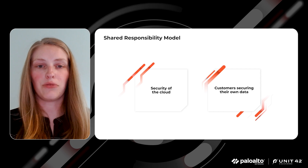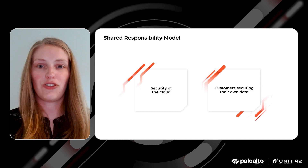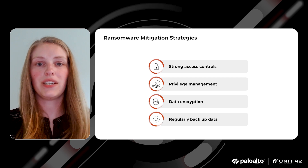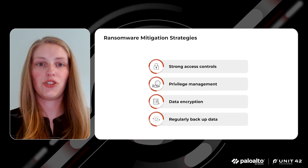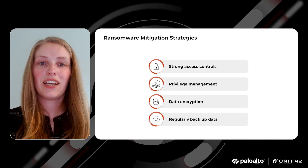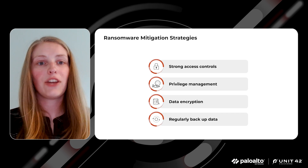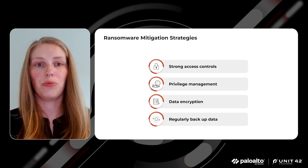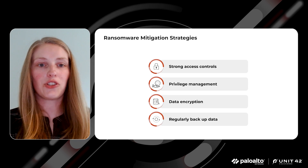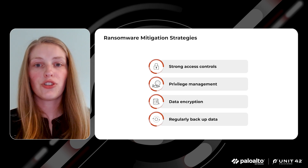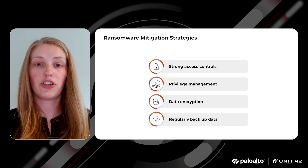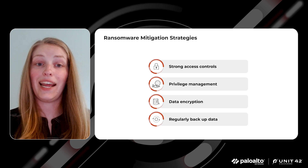To effectively mitigate the risks of ransomware in the cloud, there are several strategies we should prioritize. Implementing strong access controls and privilege management is crucial in preventing unauthorized access to cloud resources in the first place. Companies must make sure to utilize multi-factor authentication and role-based access controls and regularly review and update user privileges to minimize the attack surface. It's also important to apply data encryption mechanisms to ensure that even if an attacker gains access to your data, it remains unusable without the encryption keys. Encryption should be applied at rest and in transit.